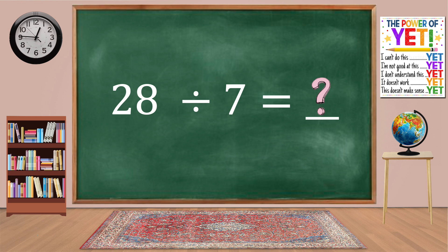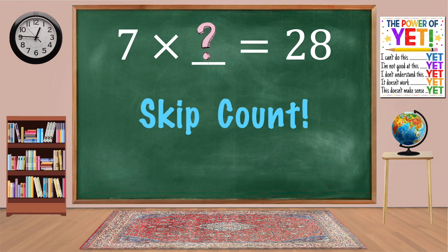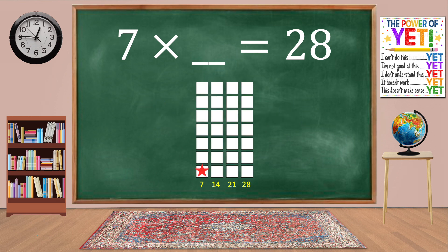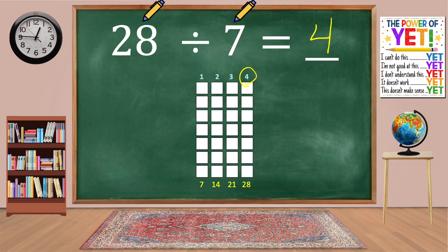Twenty-eight divided by seven equals blank. Our related fact is seven times what equals twenty-eight? Skip count: 7, 14, 21, 28. We have four columns. 7 times 4 equals 28. 28 divided by 7 equals 4.